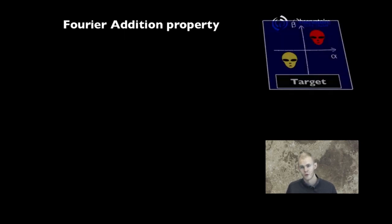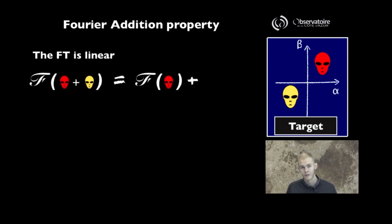The first of these properties is linearity. The Fourier transform is a linear operation. That means the Fourier transform of the sum of something can be expressed as the sum of two separate Fourier transforms.